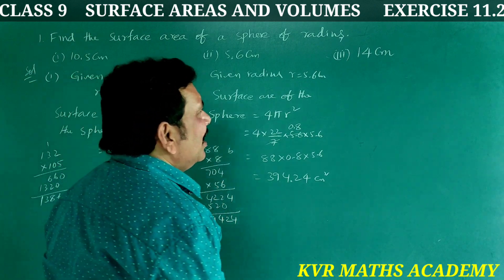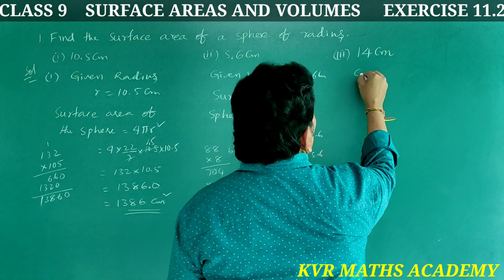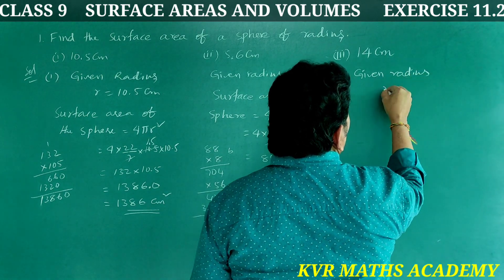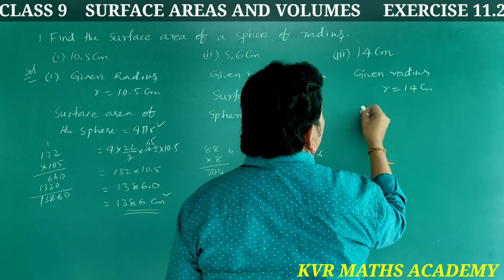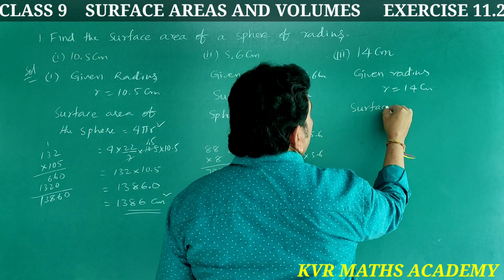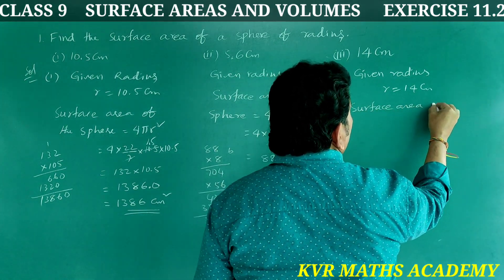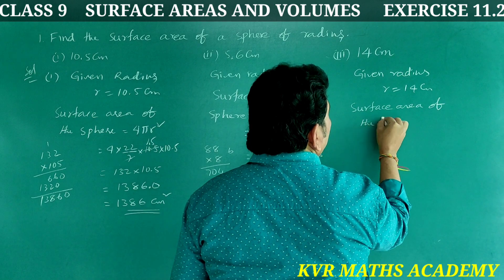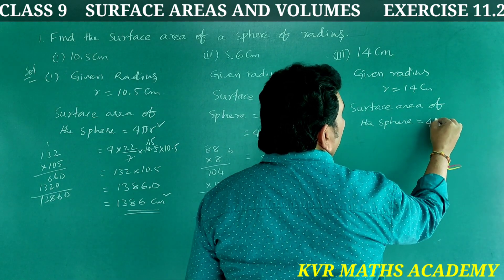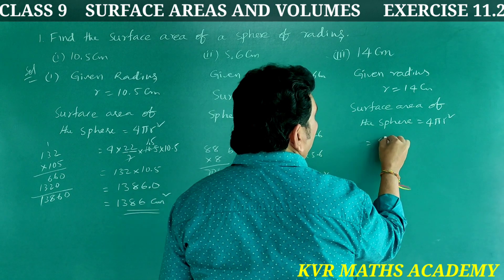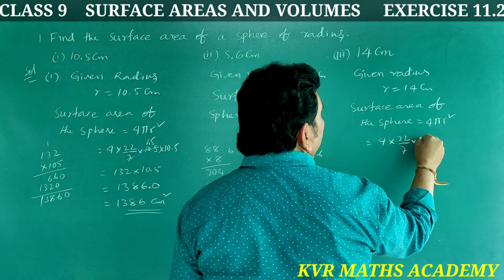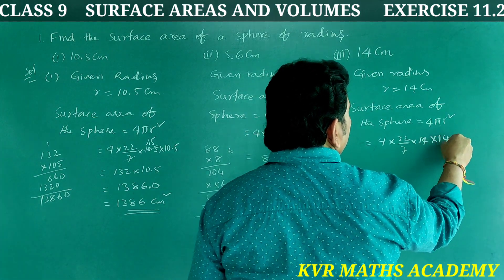Now let's do the third one. Given radius r = 14 centimeters. Surface area of the sphere = 4πr² = 4 × (22/7) × 14 × 14.